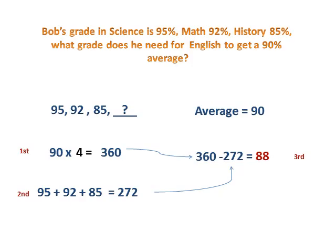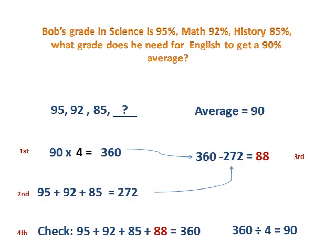So therefore, he needs to get a grade of at least 88, or exactly 88 actually, to get an average of 90. If he wants to get an average of more than 90, then he should get more than 88. Let's check. So 95 plus 92 plus 85 plus 88 is equal to 360. If we get the average of that, that is 90. And so that's the average that was given.